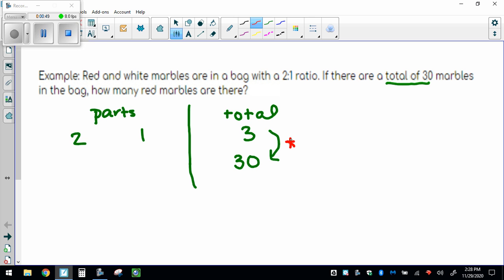Well, in this case it's going to be times 10, so I can use that rule the whole way down. So that means 20 red, 10 white.